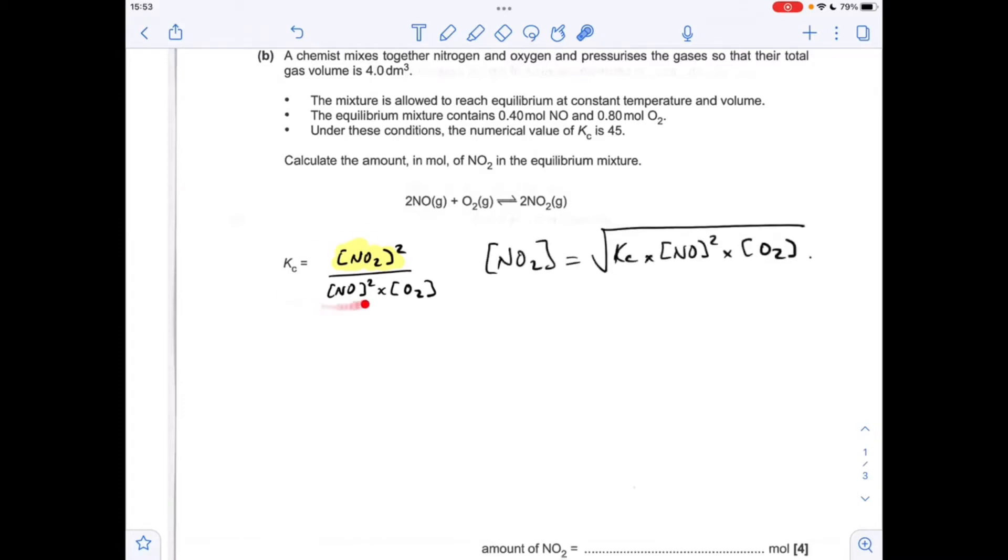So rearranging the expression, we get the concentration of NO2 equal to the square root of this. Putting the numbers in, we get that, but just remember we were told the moles of NO and the moles of O2 but obviously we need the concentration.